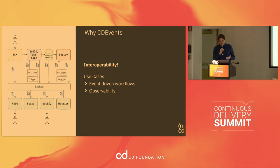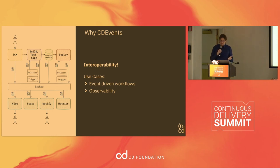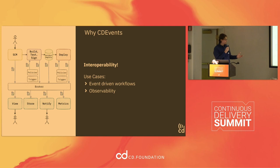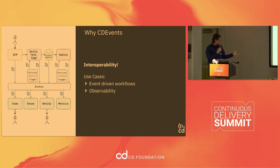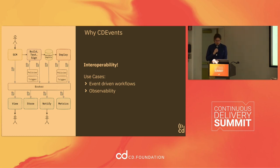The other use case that is really important for CD Events, and something also discussed today, is observability. When you have more complexity in your workflow — distributed workflows driven through events — you need a single point of observability: the capability to view what's going on in your workflow, to store that data, to notify your user when something goes wrong, and to collect DevOps metrics.